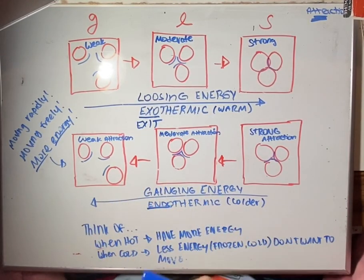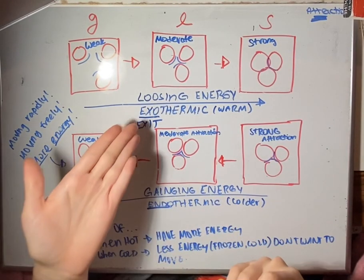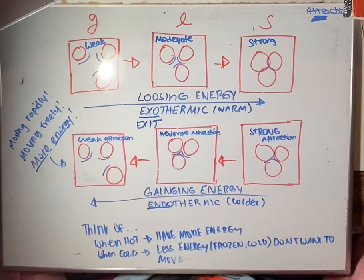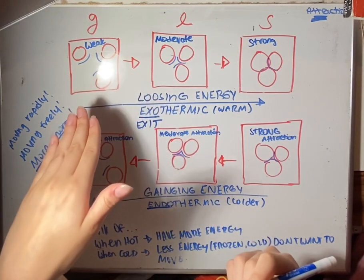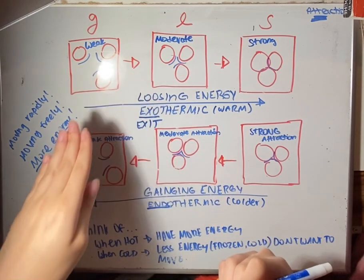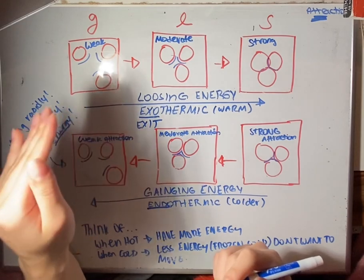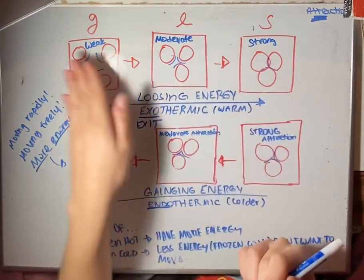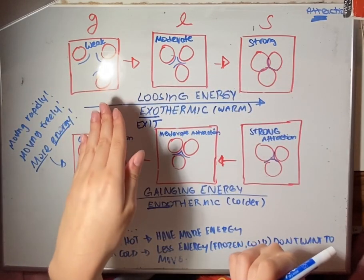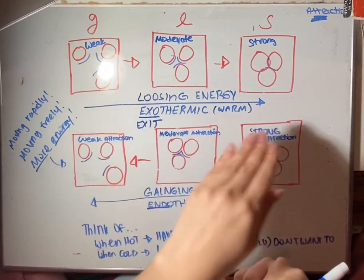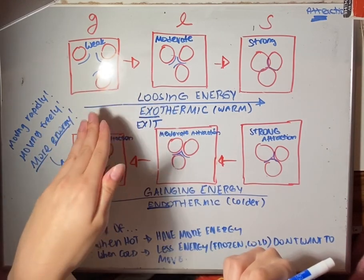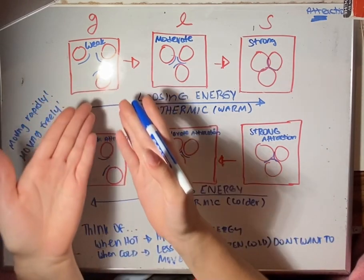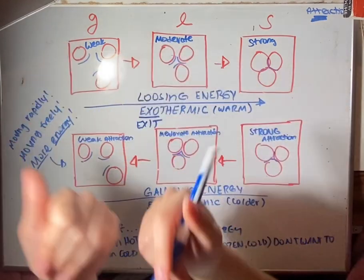This is a simple explanation of exothermic and endothermic reactions. We're going to start off with three different types of matter: gas, liquid, and solid. Each box represents a different type of matter, and you can see the actual particles that make up that matter.